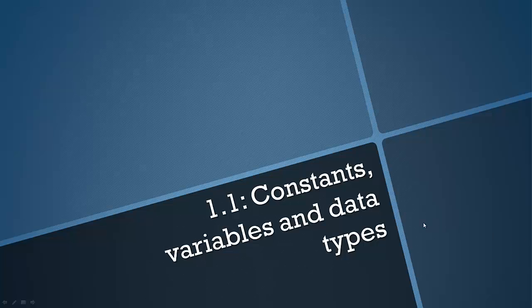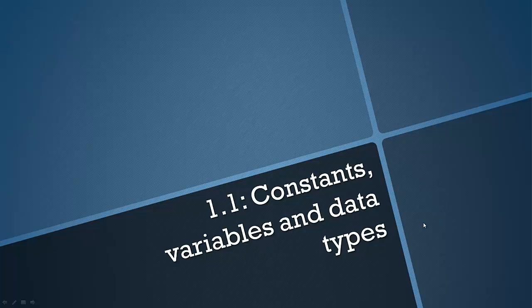Hello everyone and welcome to video number one covering the AQA GCSE Computer Science course. I'll be following the specification in all of these videos almost to the T, following everything in order that the specification gives. Topic number one is named Constants, Variables and Data Types.